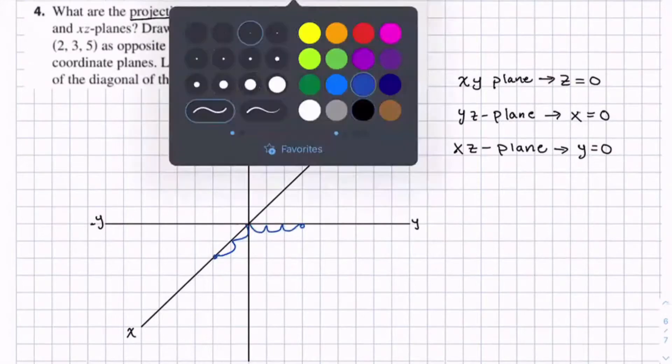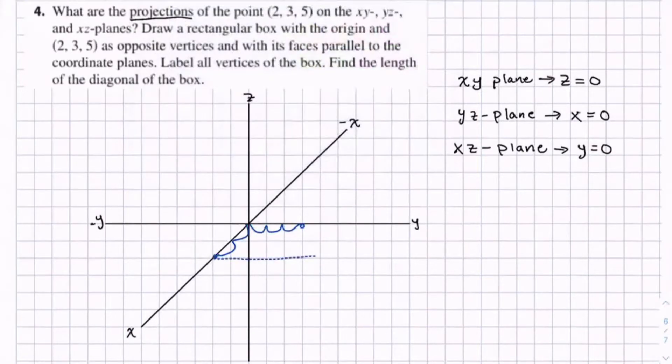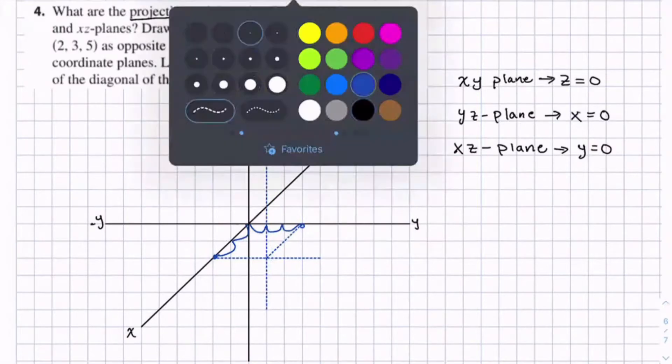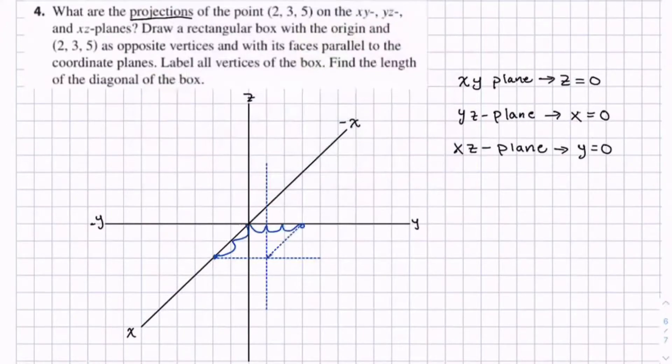We draw our parallel lines. And we go up. Draw our vertical line. And we go up 5: 1, 2, 3, 4, 5. So here's our point right here.